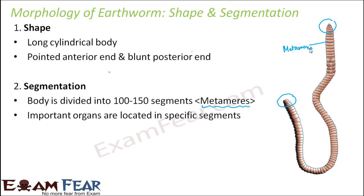Important organs are located in specific segments. The usefulness of these segments is that you can actually locate which organ is where. For example, if you want to know where the intestine is, you can say it is located around such-and-such segments. You can locate the male genital pore, female genital pore, or the mouth using the segment number.